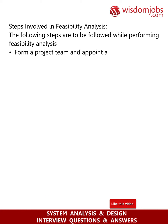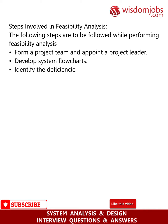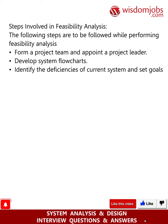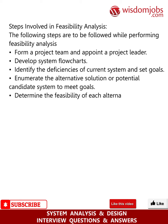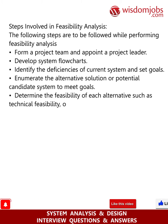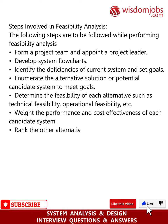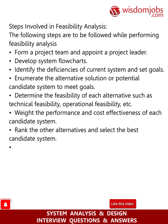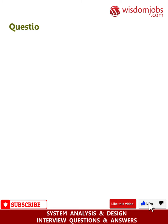It identifies the possibility of improving an existing system, developing a new system, and produces refined estimates for further development. It is used to obtain an outline of the problem and decide whether a feasible or appropriate solution exists. The main objective of a feasibility study is to acquire the problem scope instead of solving the problem. The output is a formal system proposal that acts as a decision document covering the complete nature and scope of the proposed system. Steps in feasibility analysis: form a project team and appoint a project leader, develop system flow charts, identify deficiencies of the current system and set goals, enumerate alternative solutions to meet goals, and determine the feasibility of each alternative such as technical and operational feasibility.